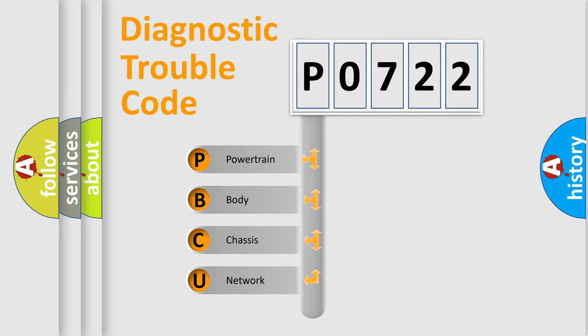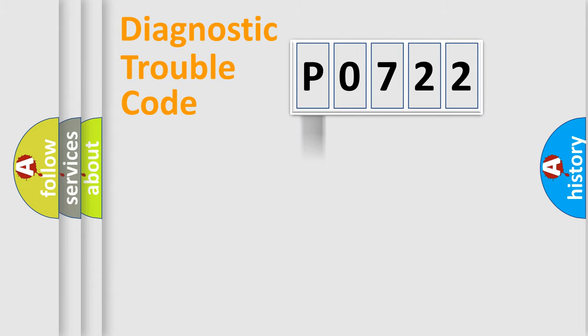We divide the electric system of automobile into four basic units: Powertrain, Body, Chassis, and Network.